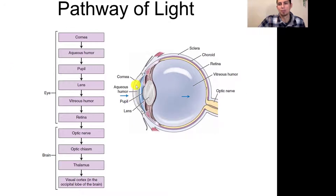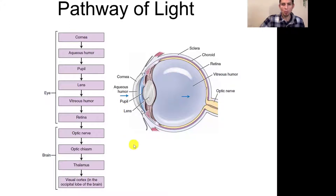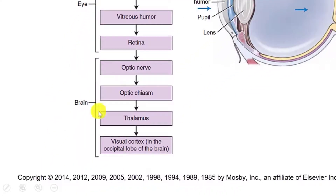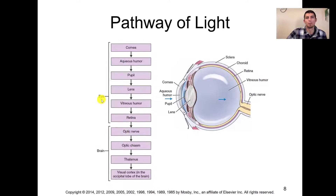Through the pupil, light hits the lens. The lens focuses it and projects it backwards through the vitreous humor and onto the retina. The retina is where we have those optic sensors, which convert the image to a signal to be transferred through the optic nerve, then back to the optic chiasm, the thalamus, and ultimately the visual cortex. We're going to stick to just the basic eye components in this chapter and not cover the brain aspect in detail.